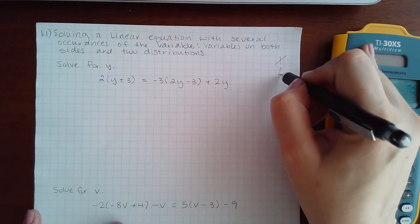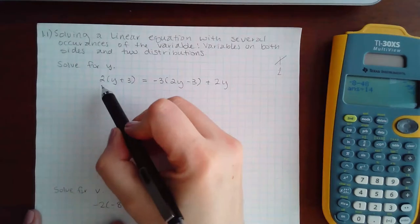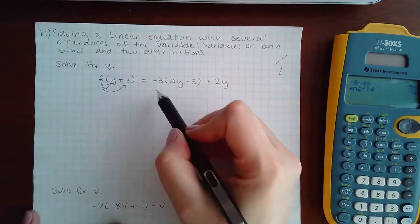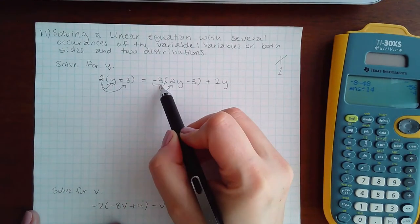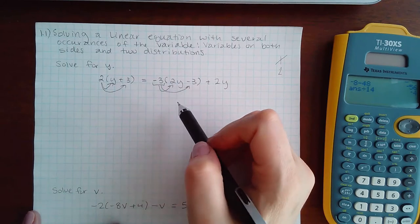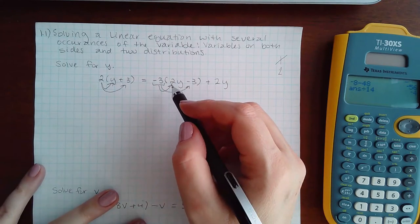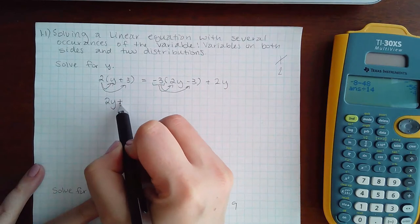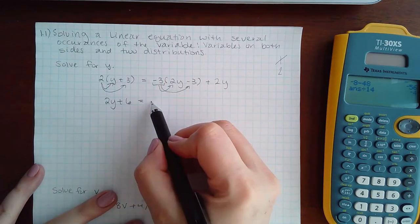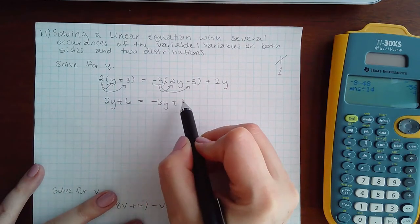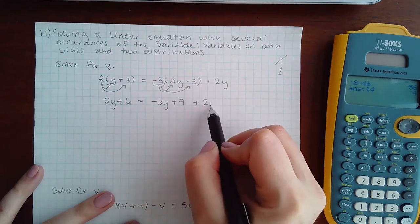Step two is to eliminate the parentheses. So I have to distribute this two and I have to distribute this negative three. So we have 2y + 6 = -6y + 9 + 2y.